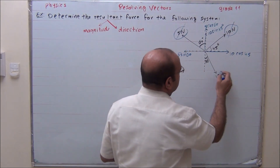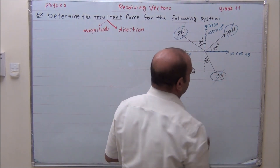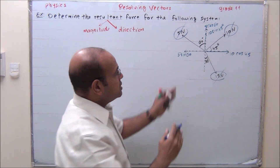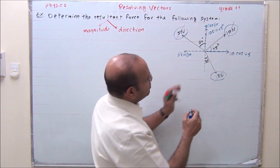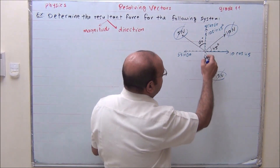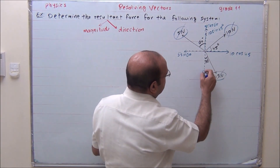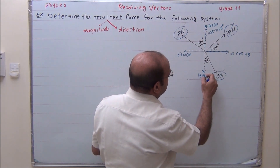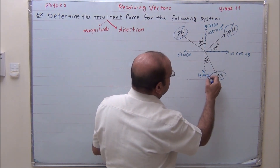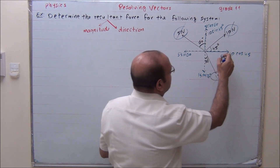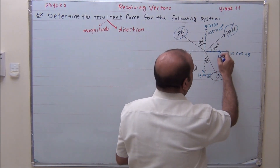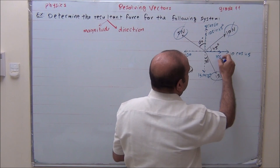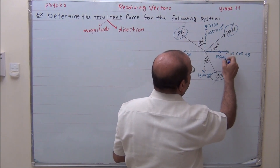We also resolve the last one, 15 Newton. The side near to the angle is cosine. So this component is 15 cosine 30, and in this direction it is 15 sine 30.